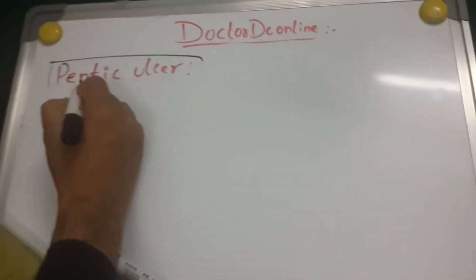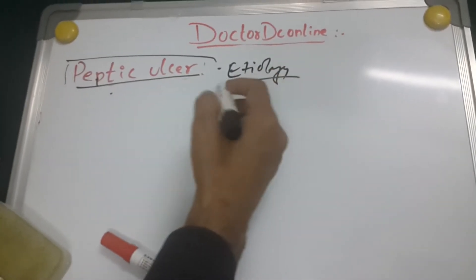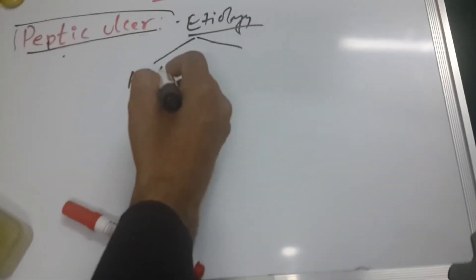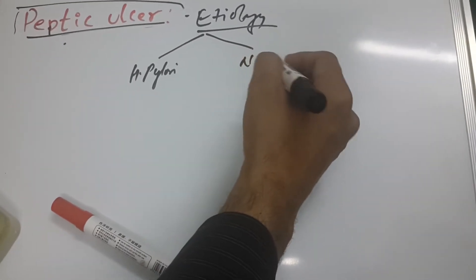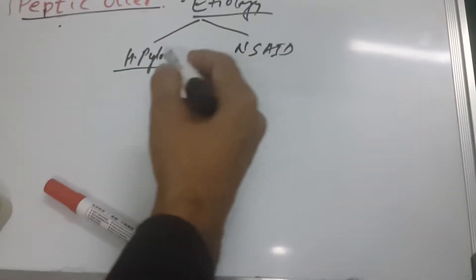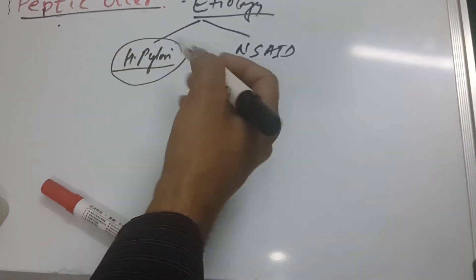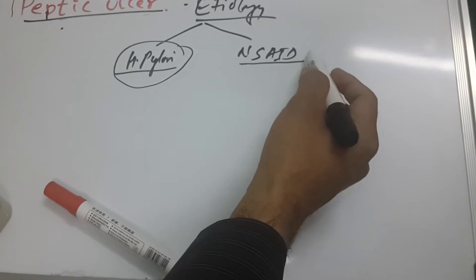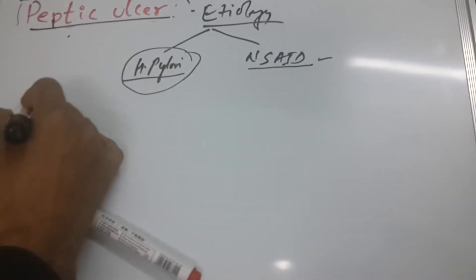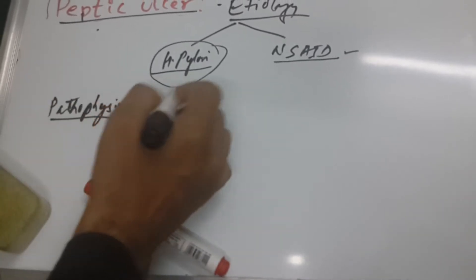Now we are talking peptic ulcers etiology. The main etiology — first is H. pylori, and another is NSAIDs. H. pylori, according to worldwide epidemiology, accounts for about 50% of patients diagnosed with etiological factors. The other most common cause is NSAID drug use. Now let's talk about pathophysiology — how H. pylori and NSAIDs produce peptic ulcers.